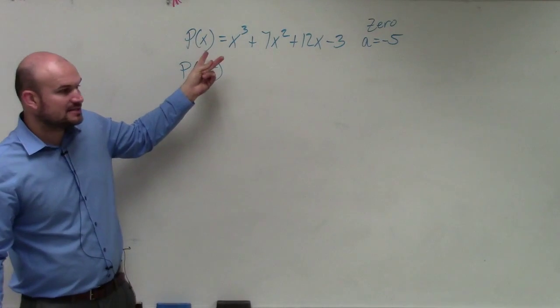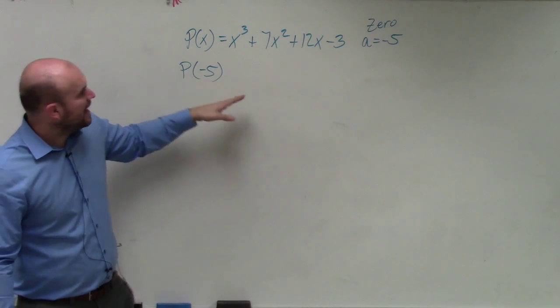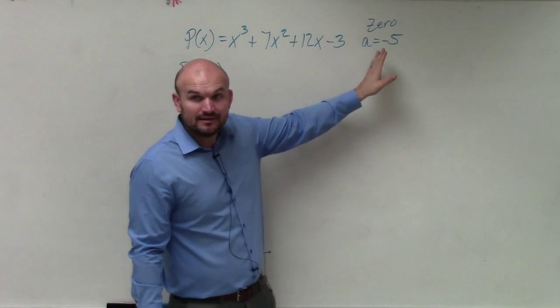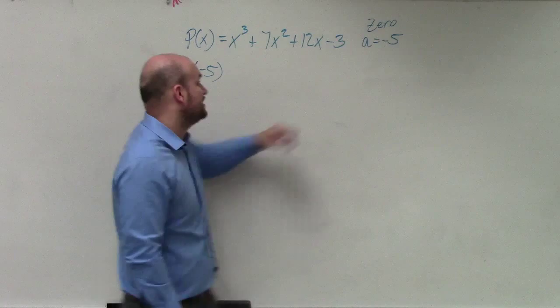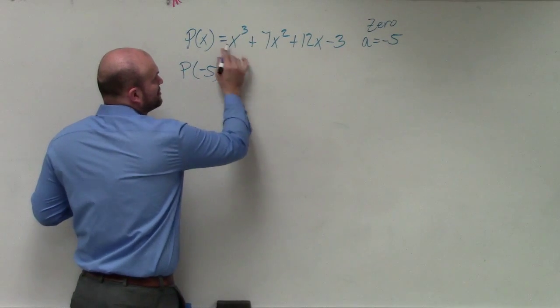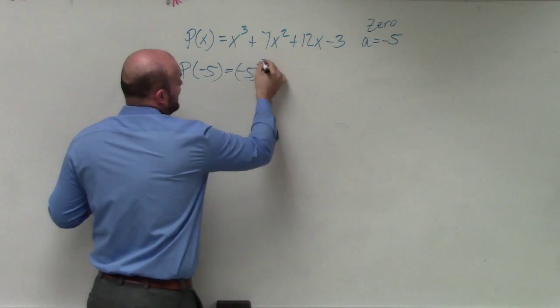So instead of doing P of x, now what we're going to do is P of a, which is negative 5. So now what I'm going to do is replace all of my x's with a negative 5.